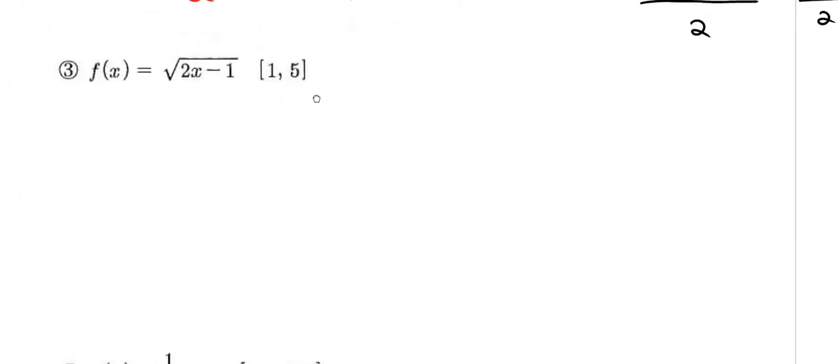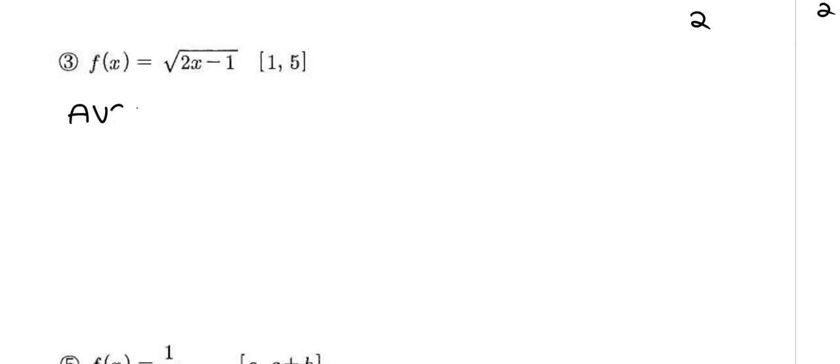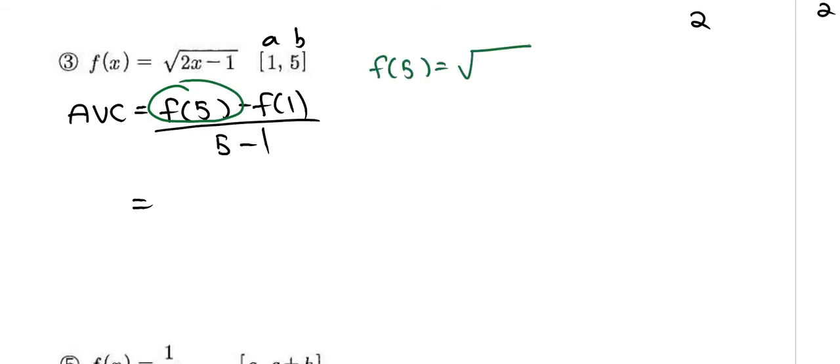Let's move on to question number 3. Average rate of change: this is your a, that's your b, so f of 5 minus f of 1 all over 5 minus 1. Let's evaluate f of 5 on the side. f of 5 is going to be the square root of 5 times 2 is 10, 10 minus 1 is 9, so the square root of 9 is 3.